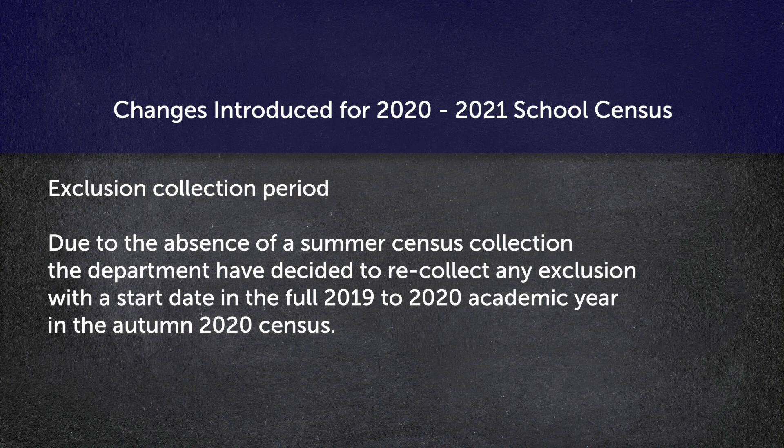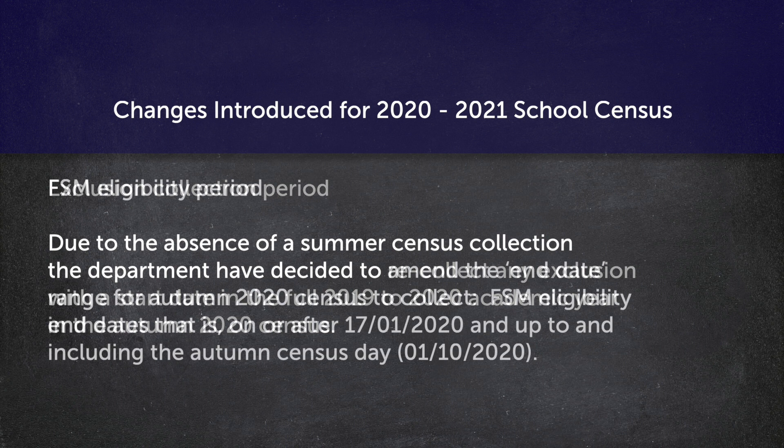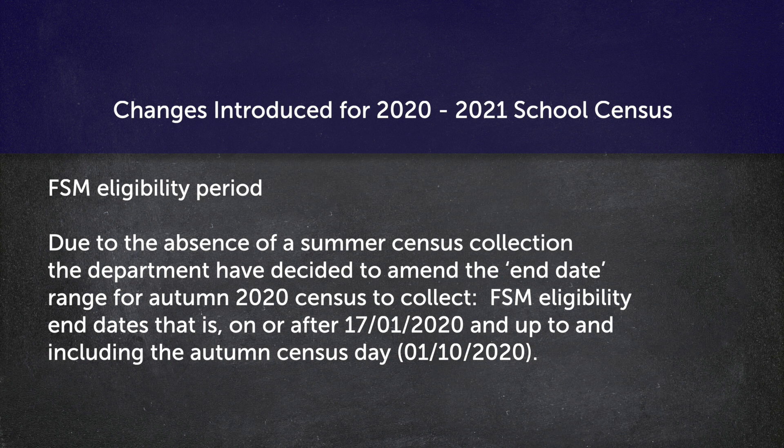Regarding the exclusion collection period: due to the absence of the summer census collection, the Department have decided to recollect any exclusion with a start date in the full 2019 to 2020 academic year. For free school meal eligibility: due to the absence of a summer census collection, the Department have decided to amend the end date range for the autumn 2020 census to collect a free school meal eligibility date that is on or after the 17th of January 2020 and up to and including the autumn census day of the 1st of October 2020.